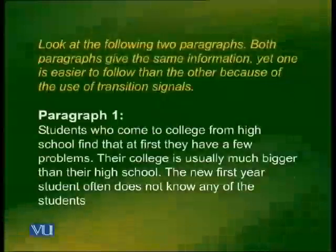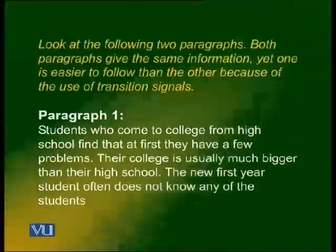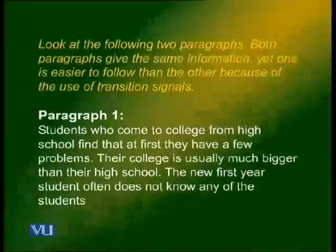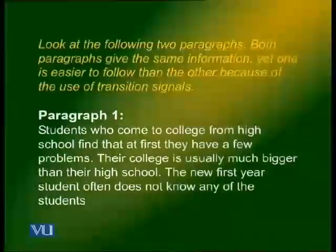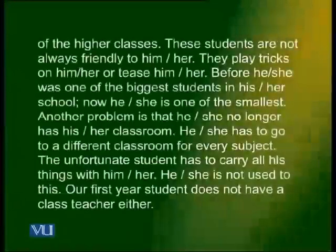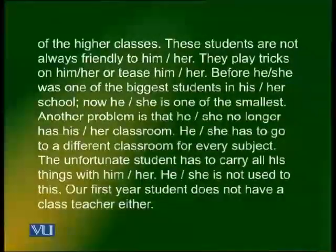We will have a quick practice. You look at two paragraphs — both give the same information, yet one is easier to follow because of the use of transition signals. Paragraph one: students who come to college from high school find that at first they have a few problems. Their college is usually much bigger than their high school. The new first year student often does not know any of the students of the higher classes. These students are not always friendly — they play tricks on him or tease him.